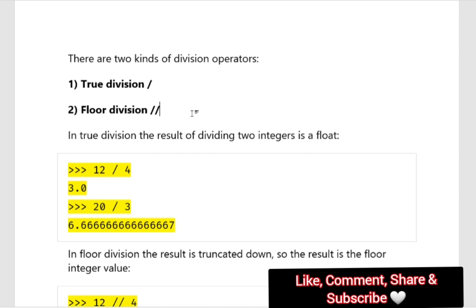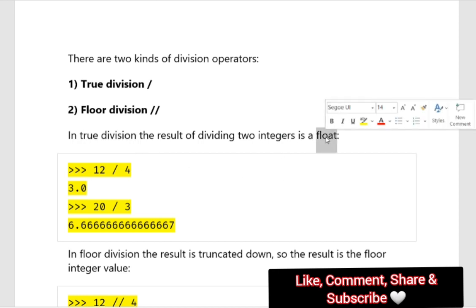In true division, no matter whether you are dividing a floating point value with a floating point value, an integer value with a floating point value, or two integer values, the result you will get will always be a float. For example, 12 divided by 4 — the answer is 3, but in Python true division it will give you 3.0.